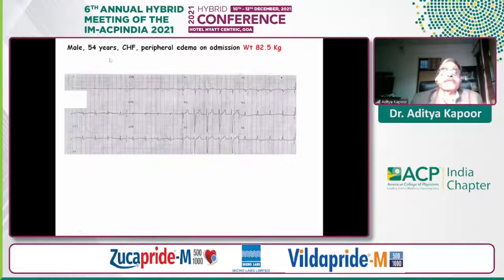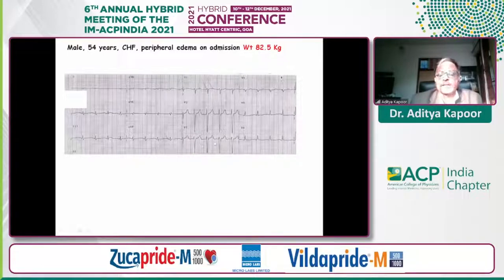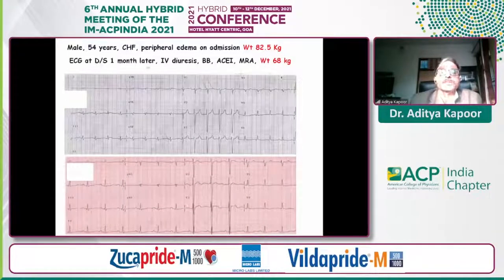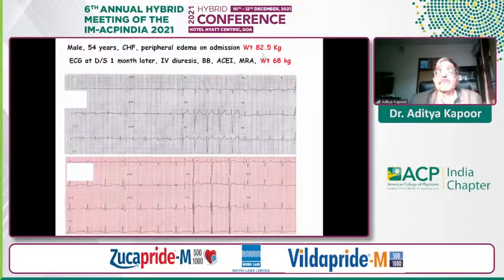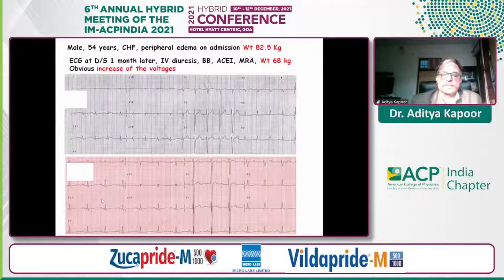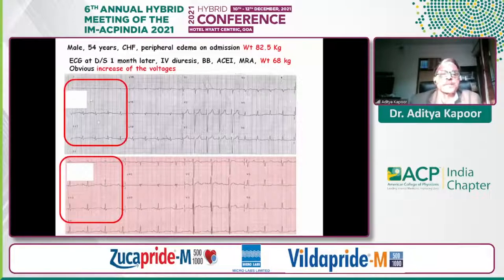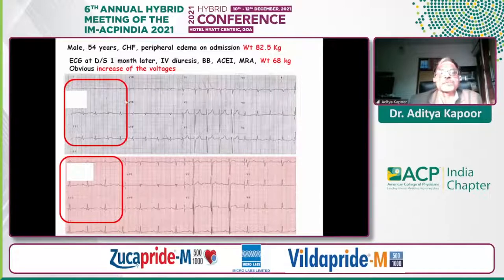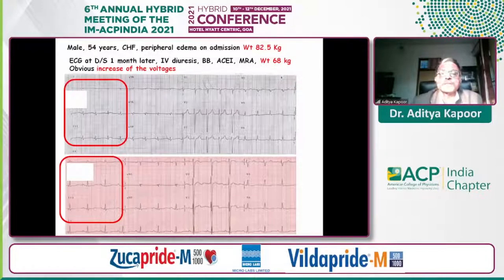A male patient with heart failure and peripheral edema, weight 82 kg. The ECG shows sinus rhythm. After IV diuresis and optimization of therapy, the patient lost nearly 14 to 16 kilos. On the discharge ECG, there is a pickup in voltages — an obvious increase — which tells us there has been good diuresis. This is a subtle point often missed: if the ECG shows a pickup in voltages, it tells us either there is good diuresis or ventricular function is improving.